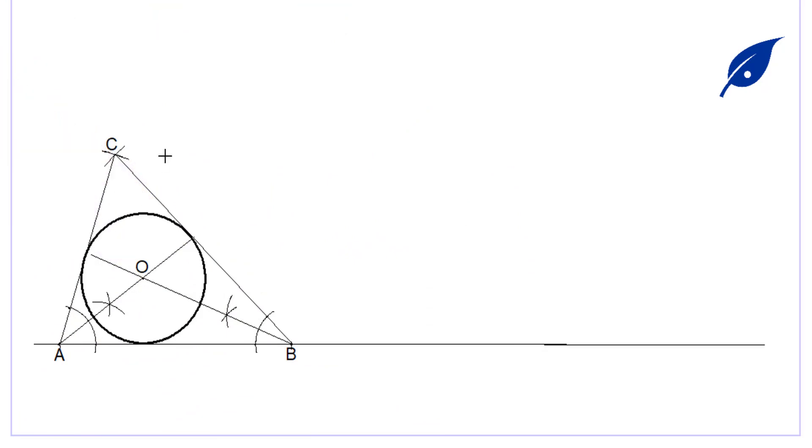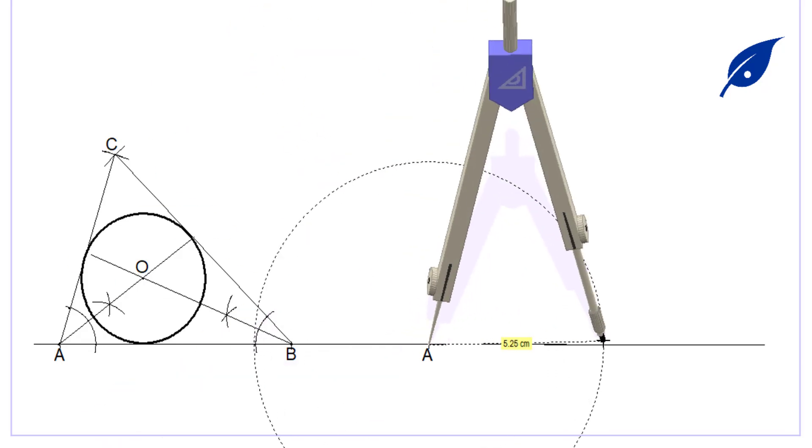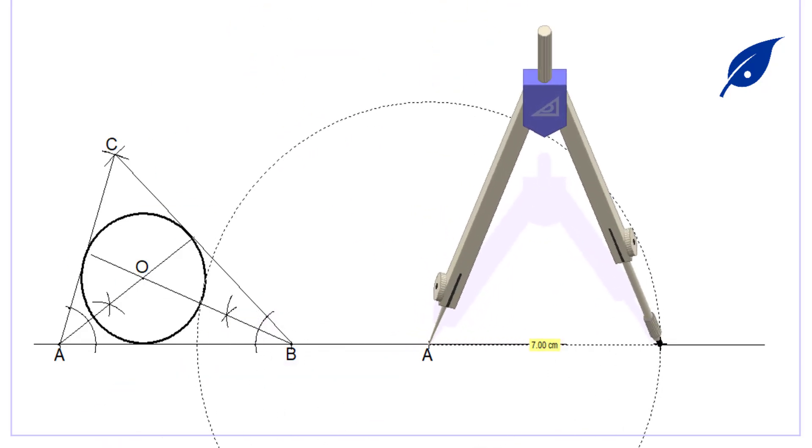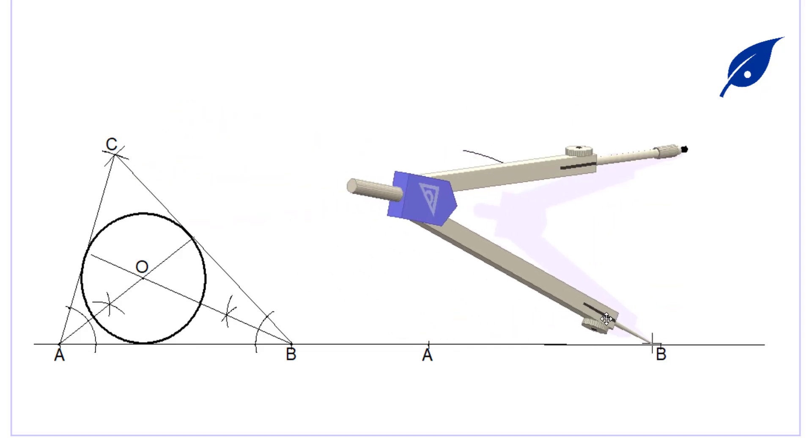I'm going to bisect the angle at point A and at point B. After bisecting, I place the center of the compass at O, open to a suitable radius, and create the circle. After doing that, we move to the second aspect: the construction of the same triangle.